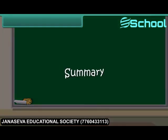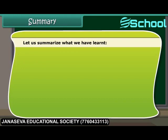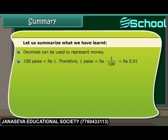Summary. Let us summarize what we have learnt. Decimals can be used to represent money. 100 paise is equal to rupee 1, therefore 1 paisa is equal to 1/100 rupee, which equals rupee 0.01.